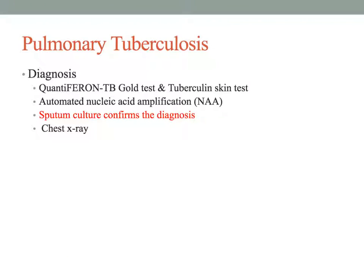If a patient comes in with these signs and symptoms—coughing up blood, HIV-positive status, anorexia, weight loss, and night sweats—we will suspect TB, place them into TB droplet isolation, and perform tests to confirm or rule out the diagnosis.